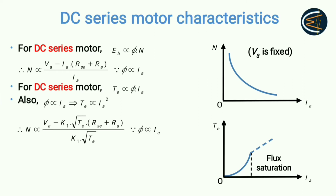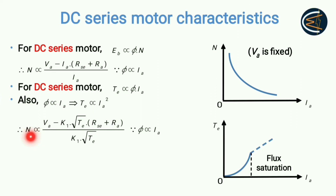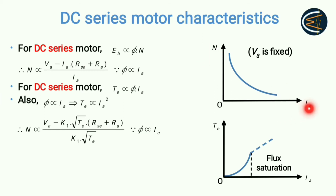If you make modifications to this equation and replace armature current with torque, you get an expression giving the relationship between speed and electromagnetic torque. If you closely observe, you'll see that speed and electromagnetic torque have the same nature of relationship as speed versus armature current — the same kind of curve.